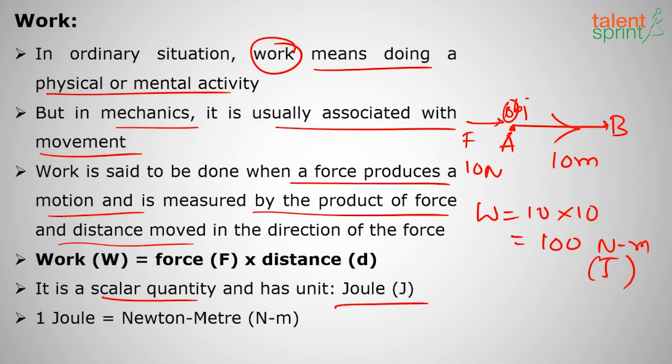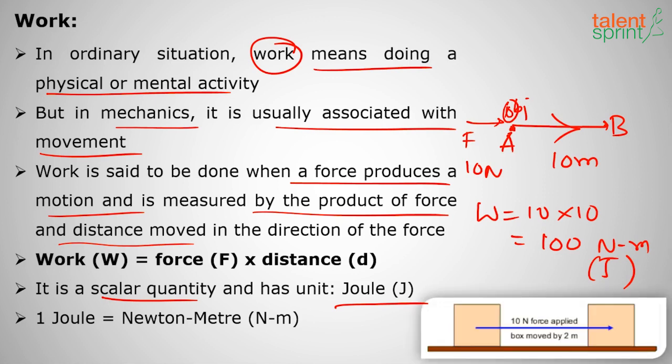Work done is the work which a force causes by producing movement. As another example, 10 newtons applied over 2 meters gives 20 newton-meters, or 20 joules, as the work done in moving an object from A to B.